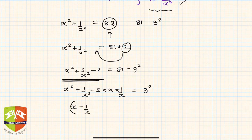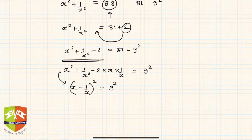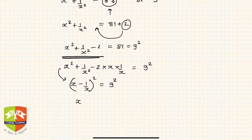If you see, this is nothing but (x - 1/x)² expansion. So (x - 1/x)² = 9². Wow, this is so good.